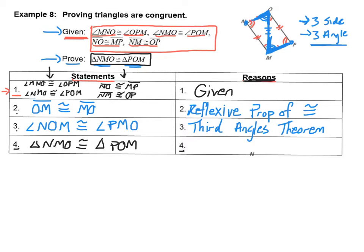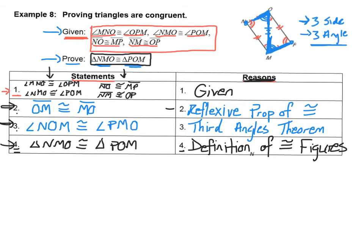I'm almost done my proof. I've made it to my final statement where I have to prove the two triangles are congruent. I've shown all three sides and all three angles are congruent, so the figures must be congruent because that is the definition of congruent figures. My final reason is the definition of congruent figures. Those two sides were congruent because they were the same side — reflexive property. Those two angles were congruent because they were the third angles in each triangle. Then the triangles had to be congruent because of the definition of congruent figures.